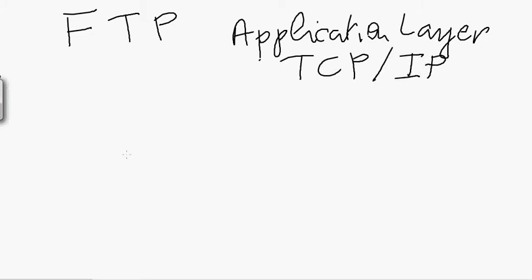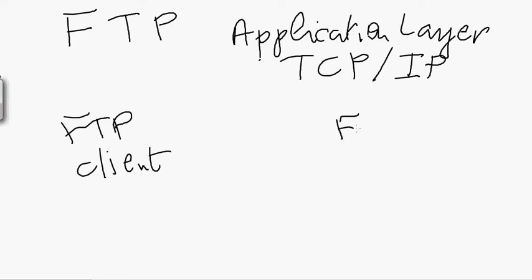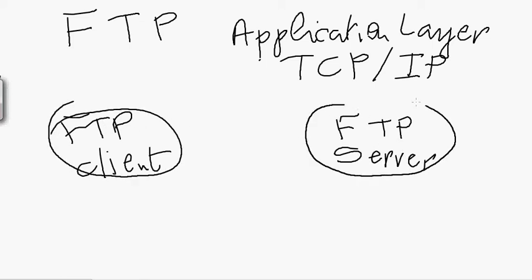FTP follows the client-server paradigm where you have an FTP client on one side and an FTP server on the other side. The client is the one which is going to request service from the FTP server and initiate opening a connection with it. The interaction between the FTP client and the FTP server is based on TCP protocol at the transport layer, making it connection-oriented and reliable.